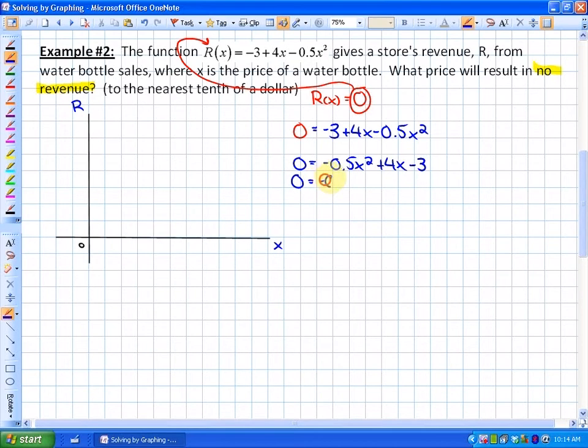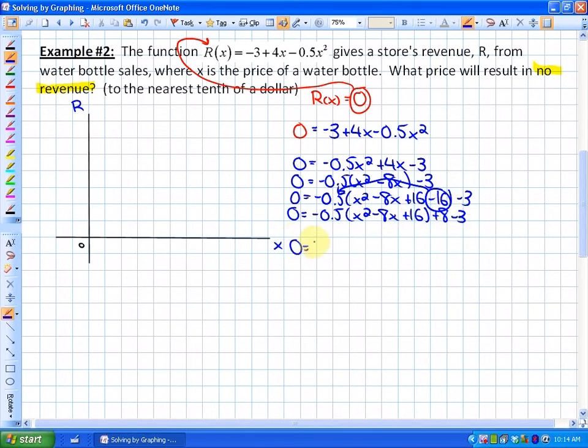So as we complete the square, if we do this carefully, we'll find out where the vertex is and then determine how to solve this. So it's zero is equal to negative 1 half x squared minus 8x. In order to complete the square, we have to add and subtract 16, remove the negative 16, and we'll find that our completed square, which is coming here quickly, will be negative 1 half times x minus 4 squared plus 5.